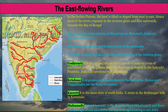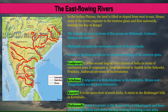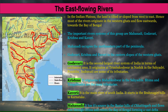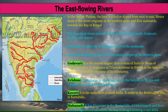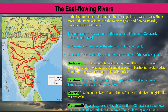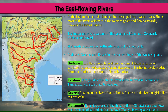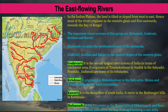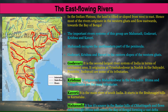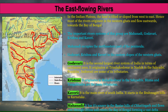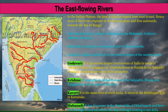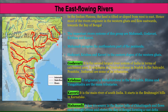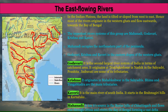The River Mahanadi has its source in the Bastar hills of Chhattisgarh. It flows east through Odisha and enters the Bay of Bengal, forming a vast delta.